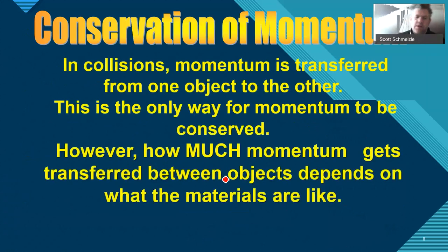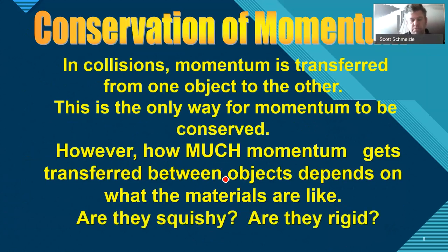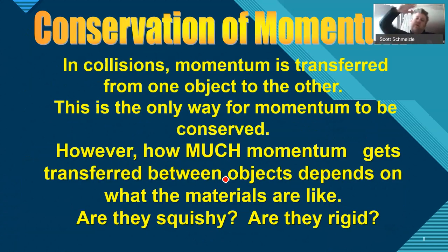In collisions, momentum is transferred from one object to another — that is the only way it can be transferred. However, how much momentum gets transferred depends on what the materials are like. Think about running into a wall or falling onto the floor. If you've got a big, squishy high-jump pad there, that helps the momentum slow down gradually — that's why padding is so important. Rigid materials, on the other hand, transfer that momentum directly.